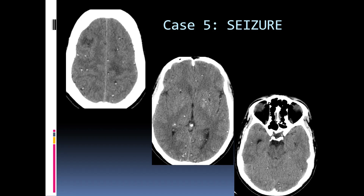Here we can see abnormality in bilateral cerebral hemispheres. Multiple cystic lesions are noted with an eccentric hyperdense scolex, and some of these lesions show surrounding edema. This is a case of disseminated neurocysticercosis, which is very common in India, and so this would be either the vesicular stage or colloid vesicular stage.